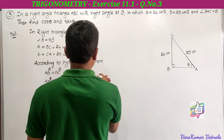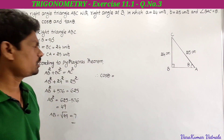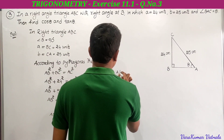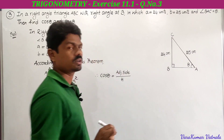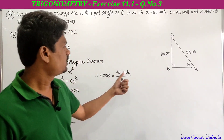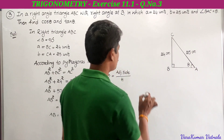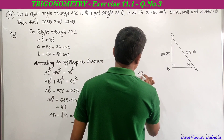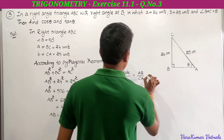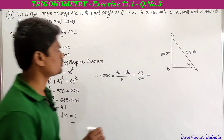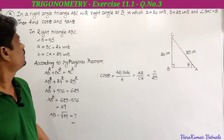Now, cos θ equals adjacent side to θ divided by hypotenuse. The adjacent side to θ is AB and the hypotenuse is CA. So it is AB divided by CA. AB is 7 and AC is 25, therefore cos θ equals 7 by 25.